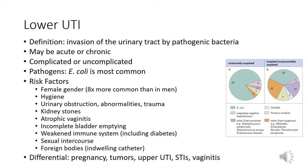Risk factors for infection include female gender, because women have shorter urethras; poor perineal hygiene; urinary obstruction, abnormalities, or trauma; kidney stones; atrophic vaginitis; incomplete bladder emptying; a weakened immune system such as diabetes; sexual intercourse; and foreign bodies including a catheter. It's also important to note that spermicidal agents adversely alter the vaginal microenvironment and can predispose patients to lower UTIs.